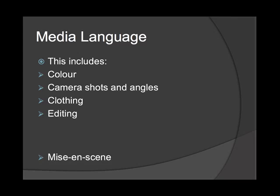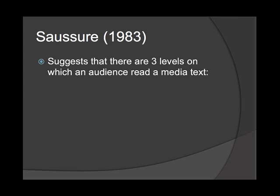Saussure (1983) suggests there are three levels on which an audience reads a media text. The first is the syntagmatic level, where an audience identifies the basic denotations of a text. This is the most obvious level of meaning — it's where they describe what they can see. For example, they might say the filmmaker has used the colour blue quite a lot.